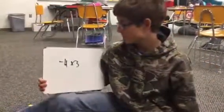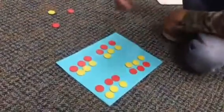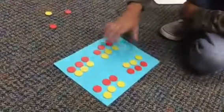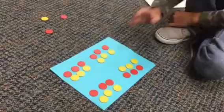Our last problem is negative 4 times 3. I've already laid it out. We made our groups of zero. We did 4 groups of positive 3.